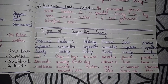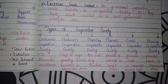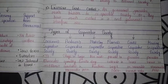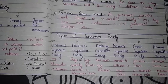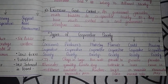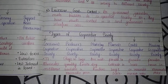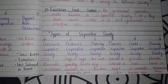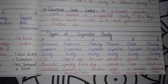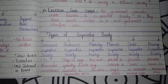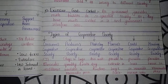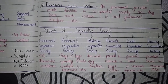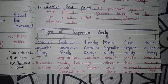Now the types of cooperative society. The first is consumers cooperative society — all the consumers make a cooperative society, they buy in large quantities, and the middleman's commission is reduced. The second is producers cooperative society.